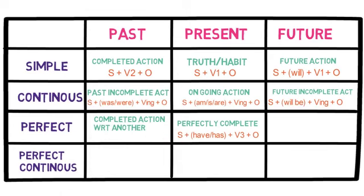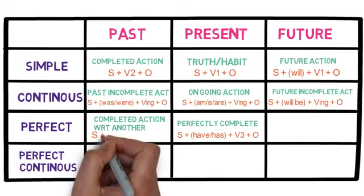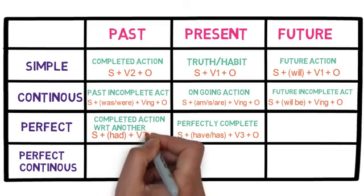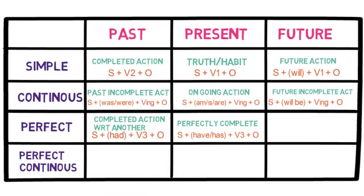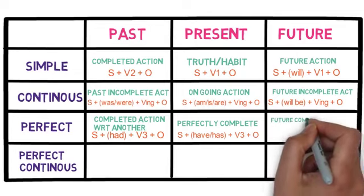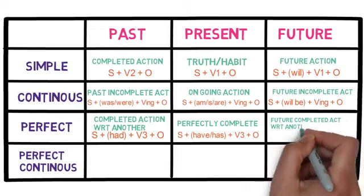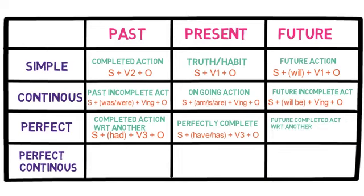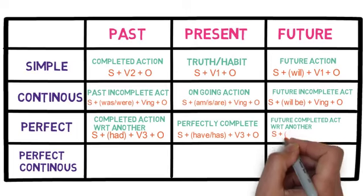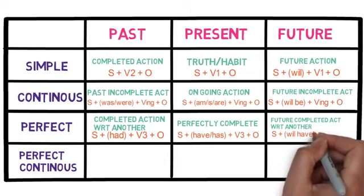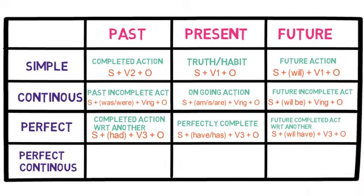The structure of past perfect tense is subject plus had plus verb's third form plus object. In the future perfect tense, it refers to an action that will happen before another event in the future. The structure is subject plus will have plus verb's third form plus object.